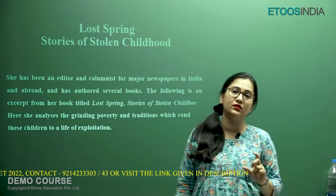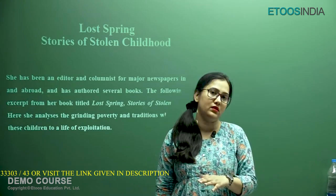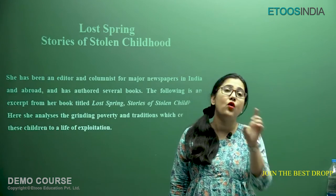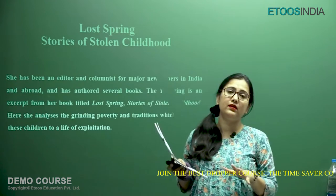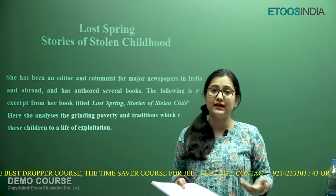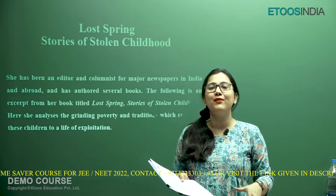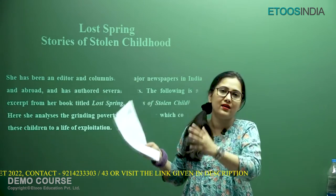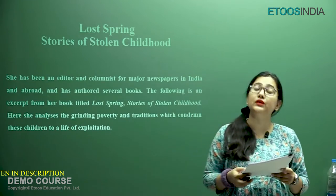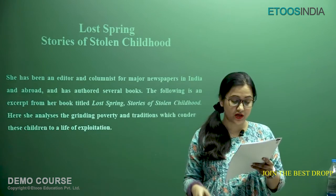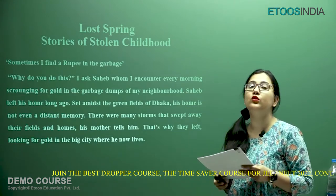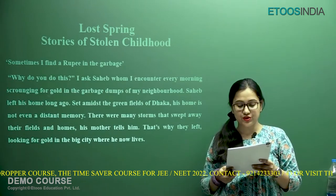The writer Anees Jung is having a conversation with the children. In both stories you see that the author is talking directly to the children — what is presented here is a conversation. She is talking to Saheb-e-Alam, a rag picker child who is the hero of this particular story, though she also talks about several other children like him. The story opens: 'Sometimes I find a rupee in the garbage. Why do you do this?' I asked Saheb, whom I encounter every morning scrounging — scrounging means looking for, searching for — gold in the garbage dumps of my neighborhood.